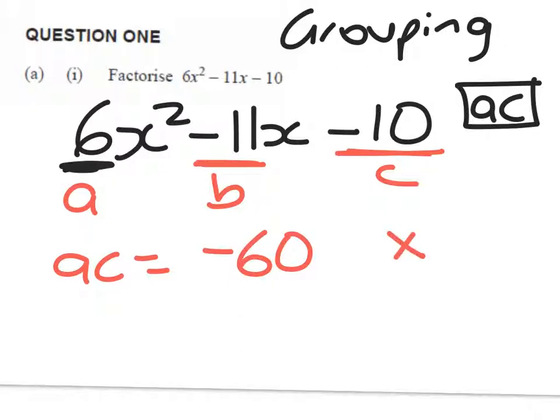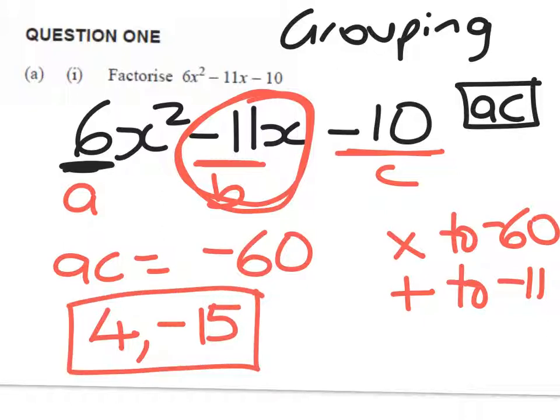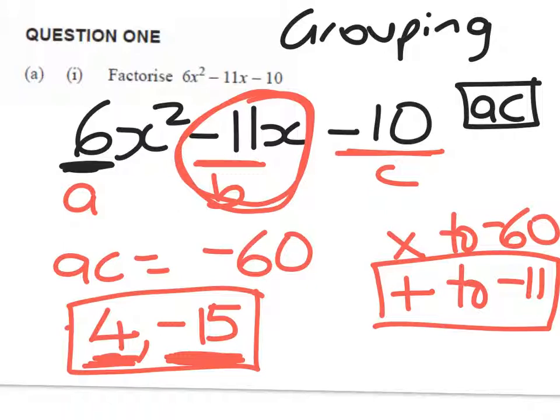A times C is equal to negative 60. We want two numbers that times to give me negative 60 and we want them to add to negative 11. So it's just a little bit different from what we do with our first easy quadratics. So those two numbers, you need to stop and pause at this point and have a think. They're going to be 4 and negative 15. We want the 15 part to be the negative part because negative 15 plus 4 will add to negative 11. And they multiply to negative 60. So what we're going to do now is we're going to take those two and break that middle term up into those.